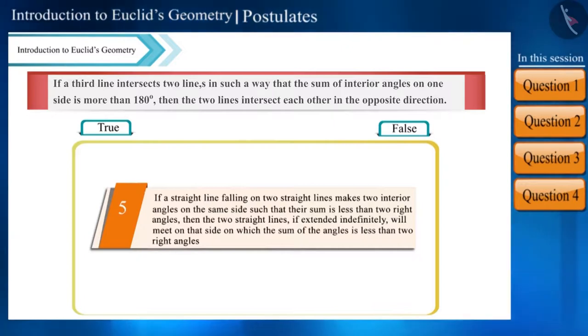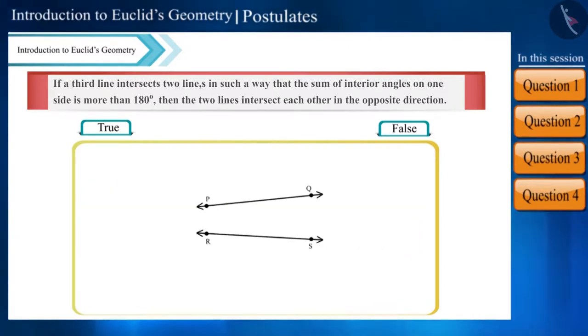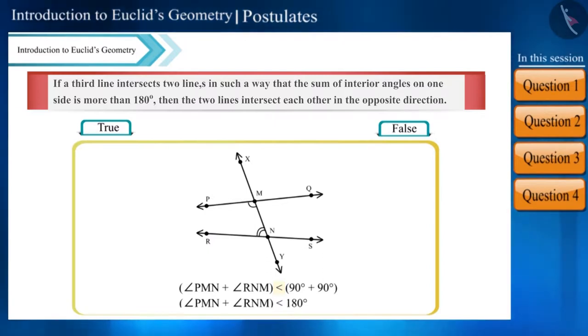Friends, this statement is Euclid's fifth postulate given in a different form. If the sum of interior angles on any one side is less than 180 degrees, that is less than the sum of two right angles, then these lines will intersect on the same side.